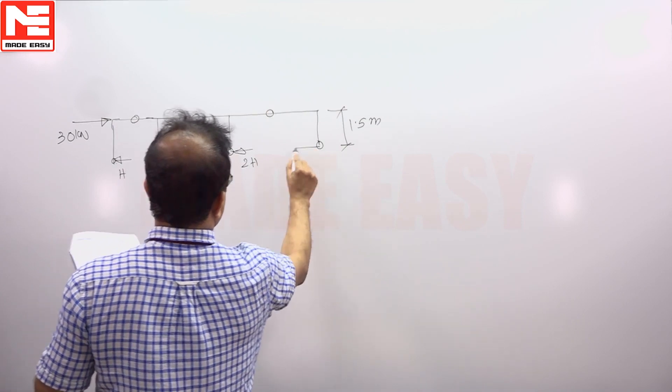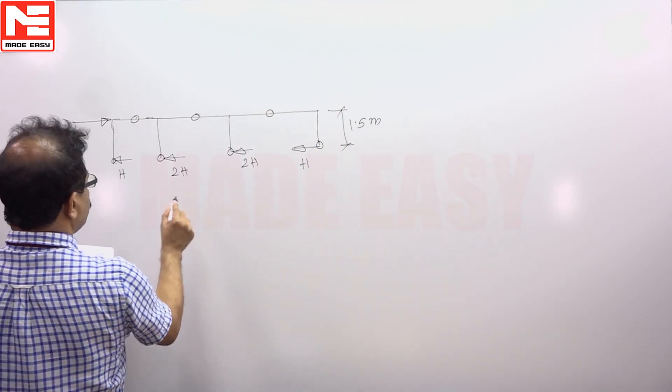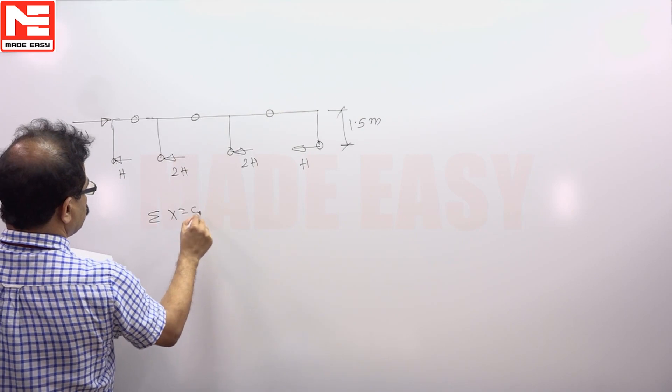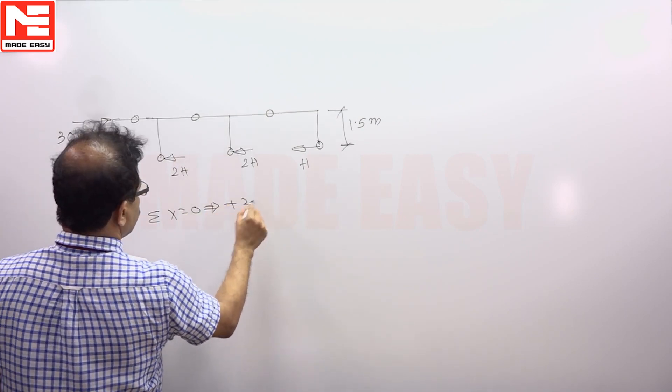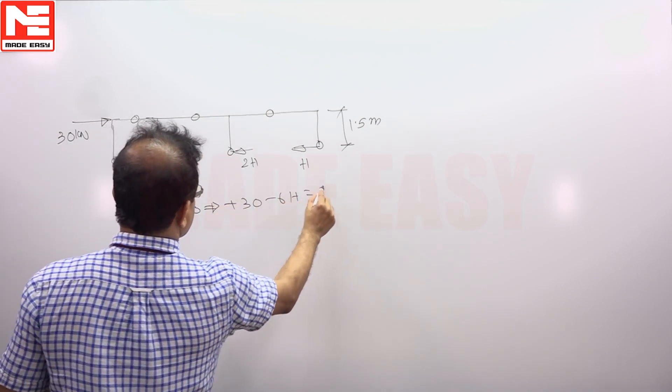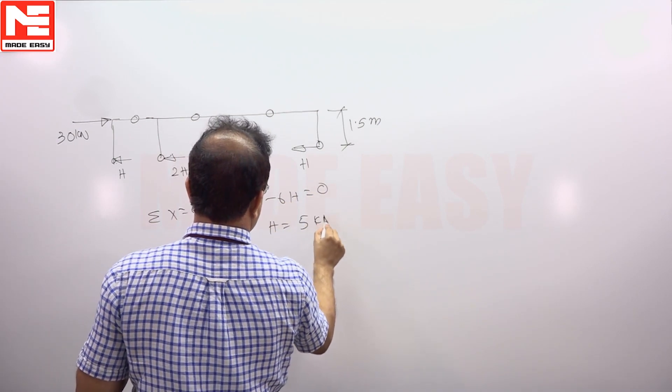Then this will be h. Now if we apply sigma x is equal to 0, plus 30 minus 6h is equal to 0, h you will get 5 kilonewtons.